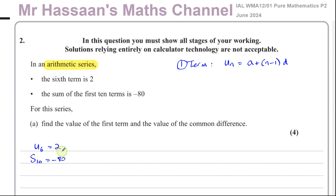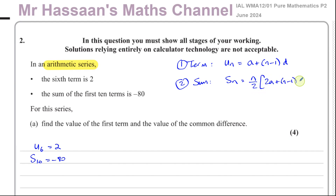In this case we have U6, so n equals 6. The second formula is for the sum of terms: the sum of the first n terms is given by n over 2 times (2a plus (n minus 1) times d). We also have another formula — n over 2 times (a plus l) — which applies when you know the first term, last term, and number of terms, but we won't need that here.